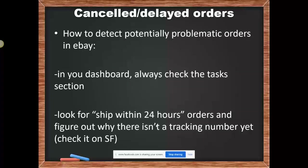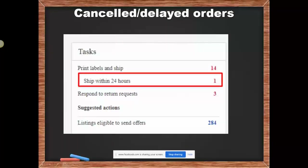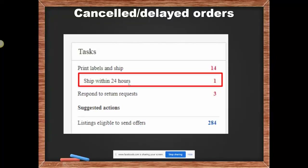If you click 'Ship within 24 hours,' you get to the order that needs a tracking number by end of day, because tomorrow it will become overdue. Your job — or your VA's job if you have a customer service VA — is to look at this 'Ship within 24 hours' alert and figure out why there isn't a tracking number yet. The overdue count goes to your seller level assessment and hurts you.